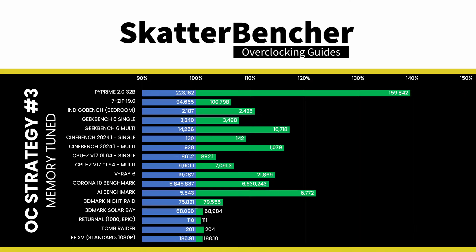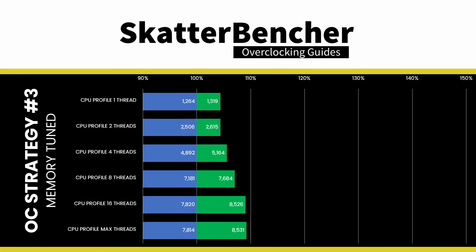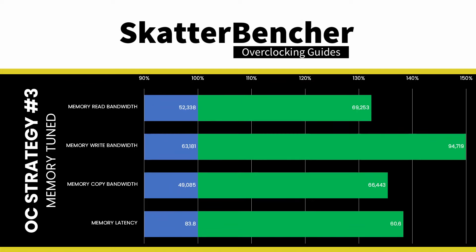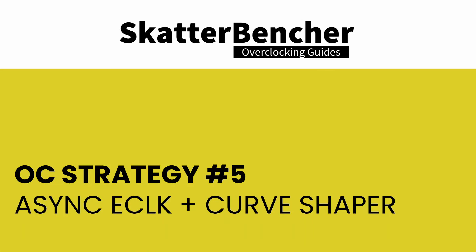We reran the benchmarks and checked the performance increase compared to default operation. Tuning the memory subsystem has a surprisingly large impact on benchmark performance. The standout improvement is in Y-Cruncher Prime, where we see a maximum improvement of +39.61% over stock — though that's very much a memory benchmark. We also see a performance uplift of 5 to 7 percentage points in other multi-threaded benchmarks such as Geekbench and AI Benchmark. The GeoMean performance improvement is +6.49%.